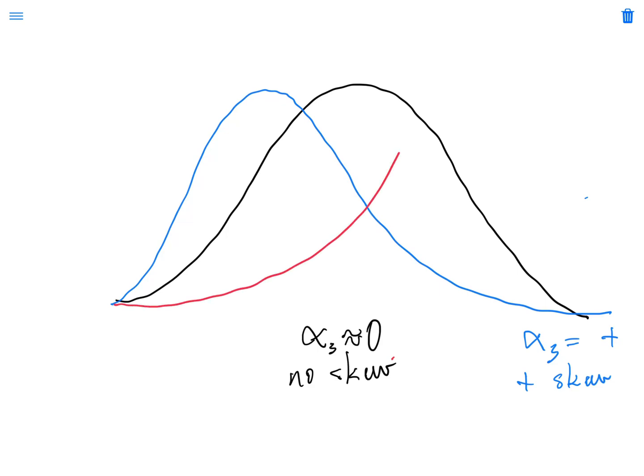And then the same thing, of course, is true with a negative distribution. I would have an alpha sub 3 that becomes negative, increasingly negative, which indicates negative skew. And the farther I am from 0, the more skewed that becomes.